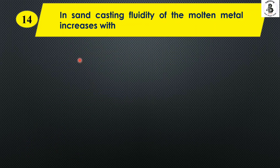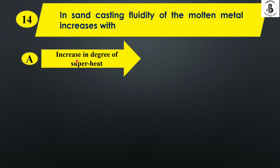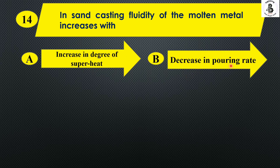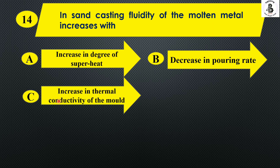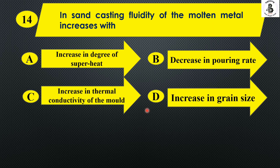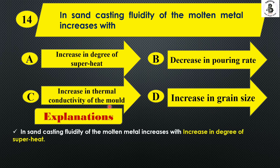In sand casting, fluidity of the molten metal increases with: Option A increase in degree of superheat, Option B decrease in pouring rate, Option C increase in thermal conductivity of the mold, and Option D increase in grain size. In sand casting, fluidity increases with an increase in the degree of superheat. The right answer is Option A.